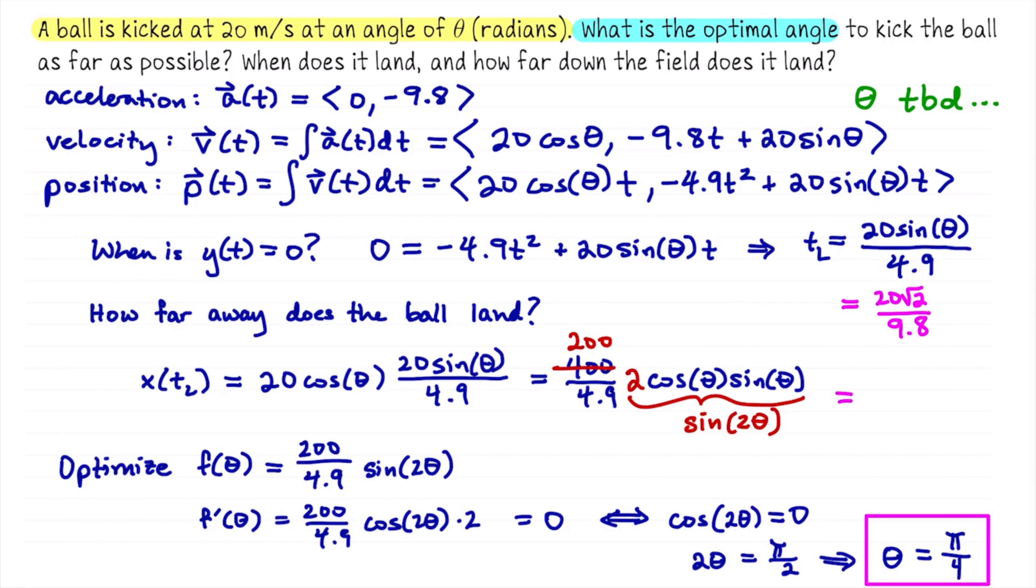And then for how far it travels down the field, it might be easier to look at the expression I have for f(theta). We have 200 divided by 4.9 times sine of pi over 2, but sine of pi over 2 is just 1. So actually this is 200 divided by 4.9. I'll finish just by mentioning the units here. Time is in seconds. And the landing point down the field is in meters. Okay, that wraps up this problem. Thank you for your attention.